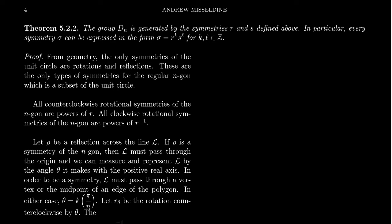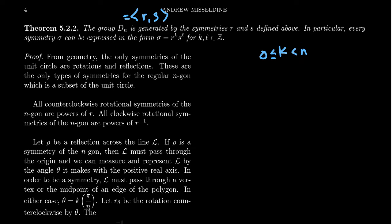With that lemma proved, we're ready for the main theorem — Theorem 5.22: the dihedral group D_n is generated by the symmetries R and S. Specifically, D_n equals the subgroup generated by R and S. Every symmetry σ can be expressed as σ = R^k S^l, where k is between 0 and n−1, and l is 0 or 1.